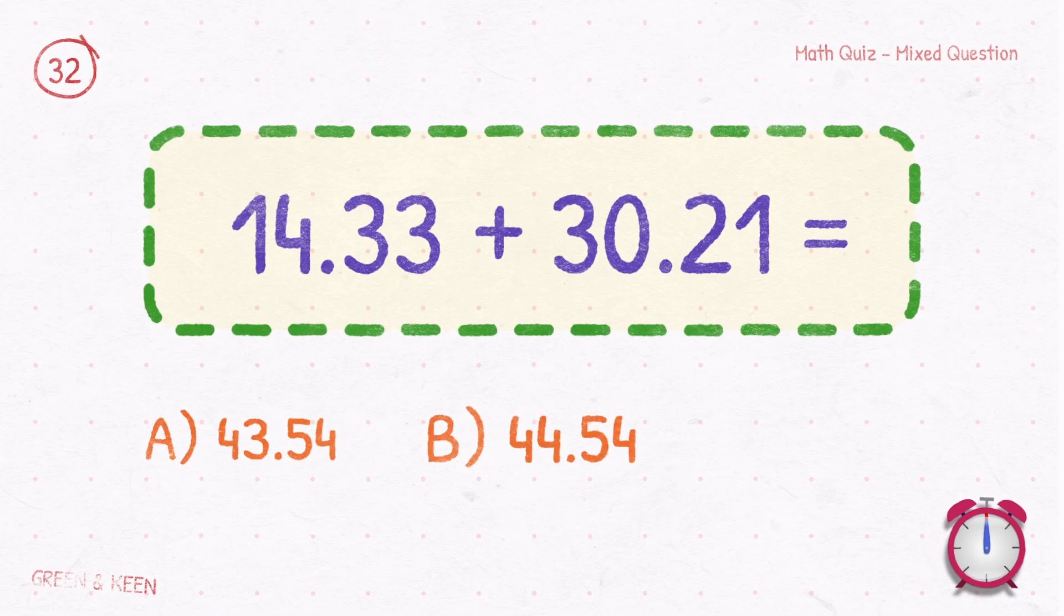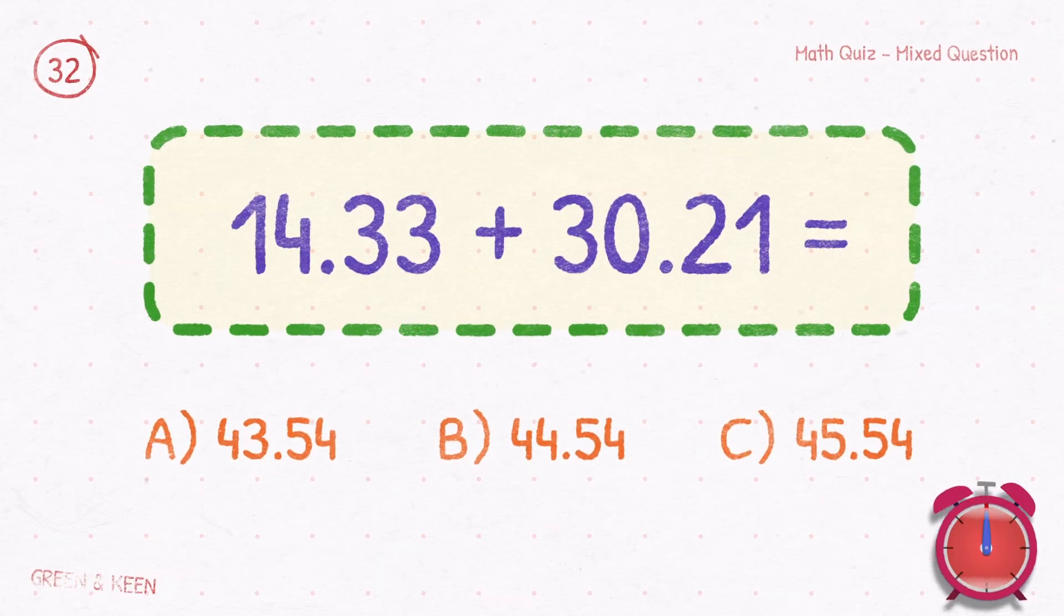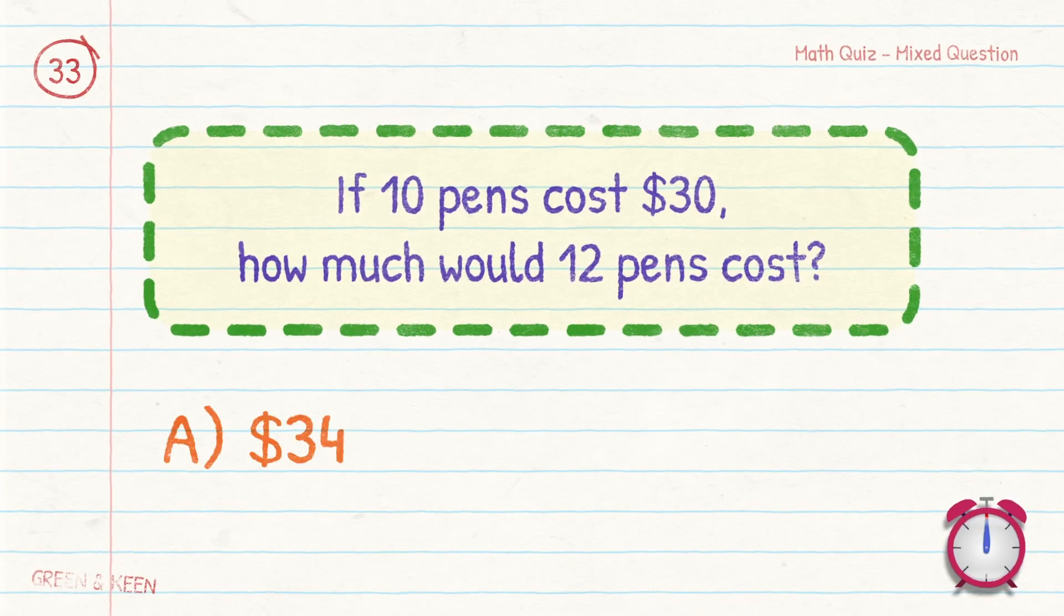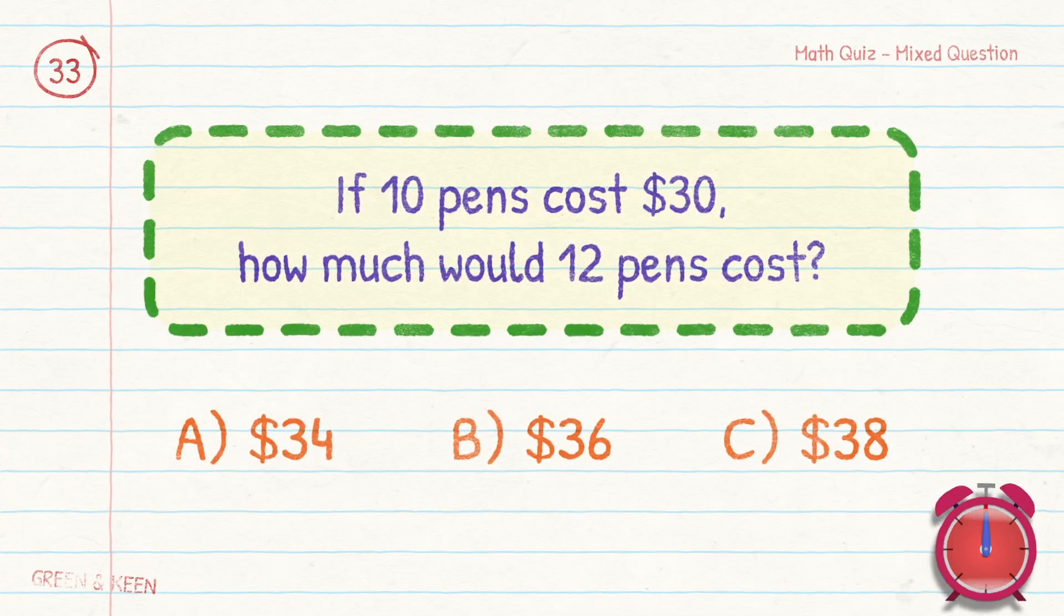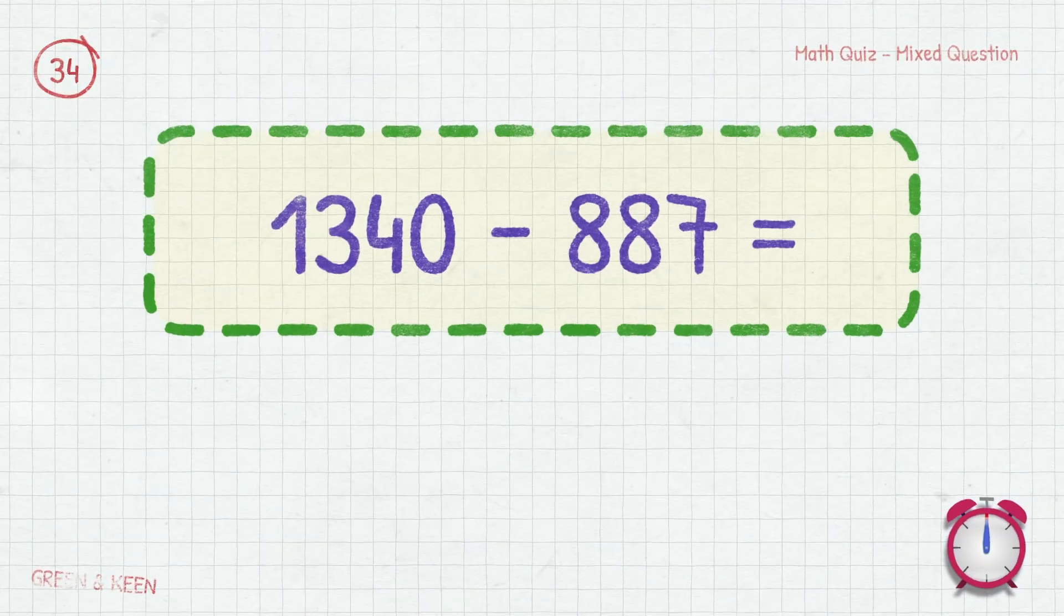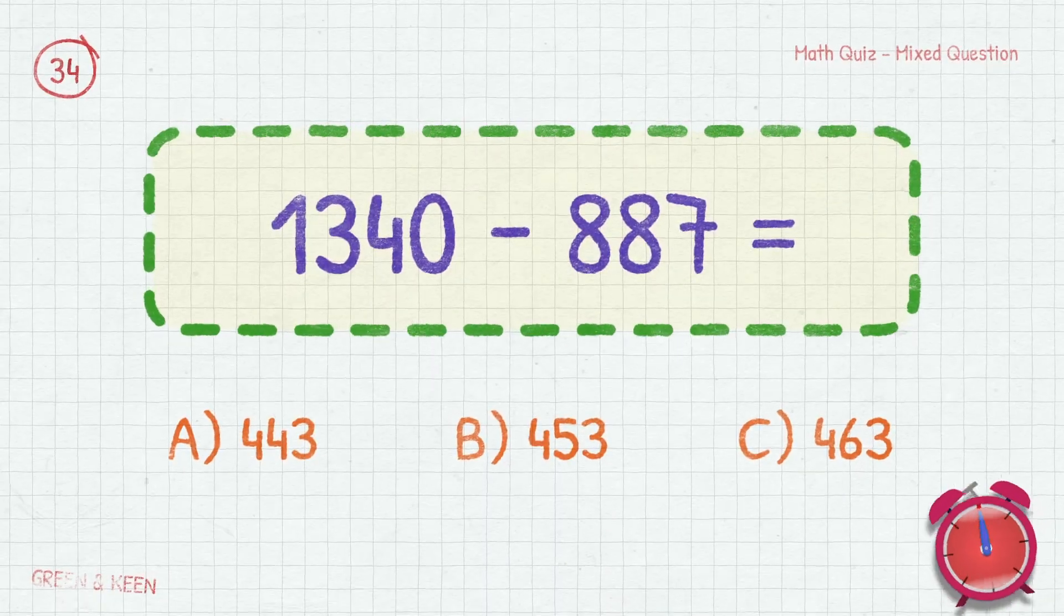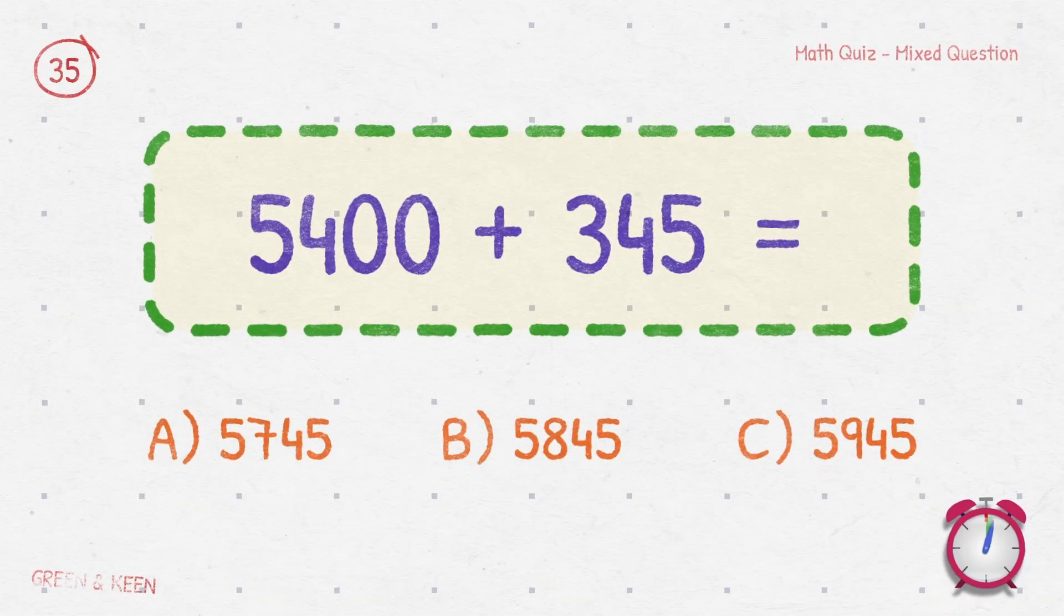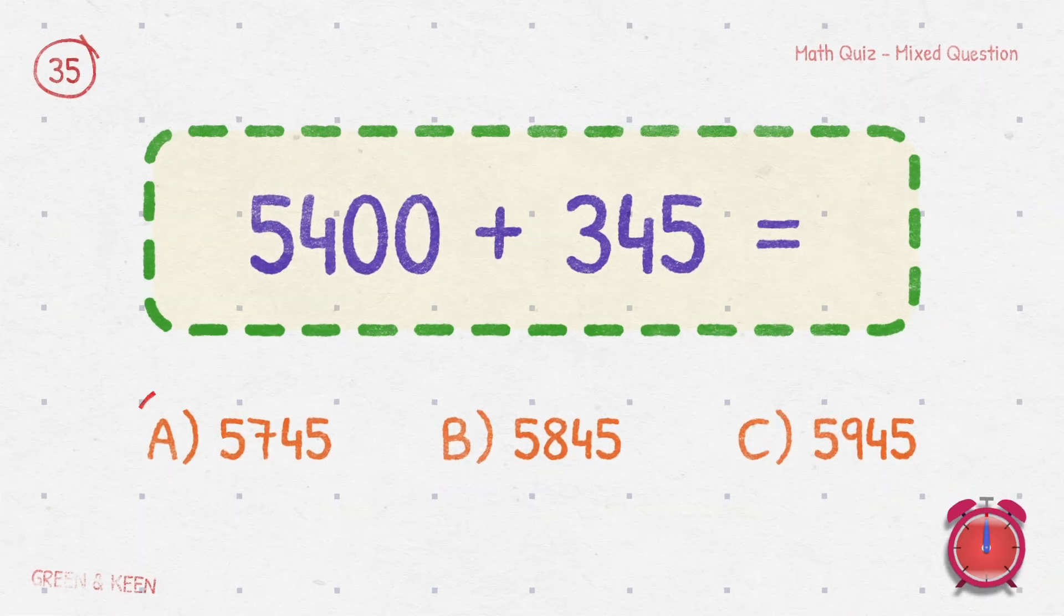14.33 plus 30.21 equals? 44.54. If 10 pens cost $30, how much would 12 pens cost? $36. 1,340 minus 887 equals? It's 453.